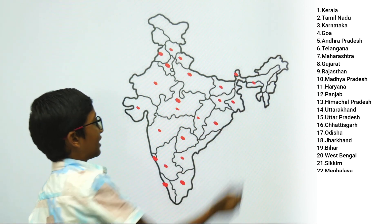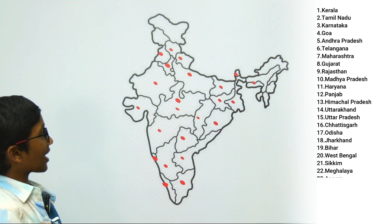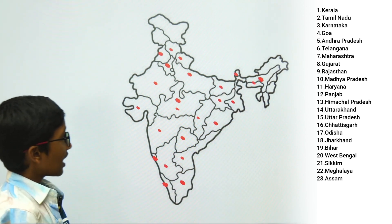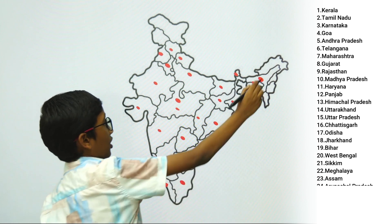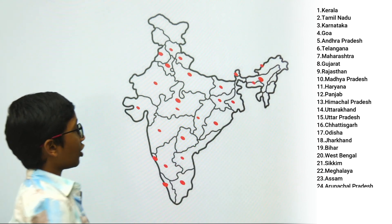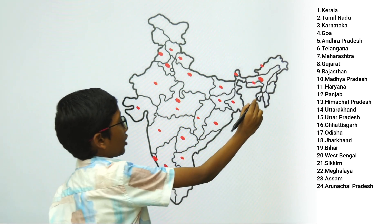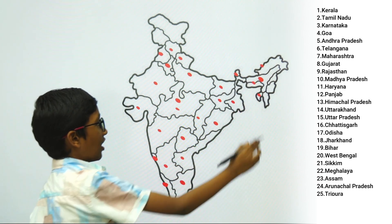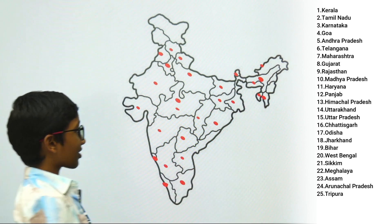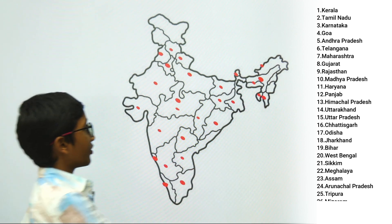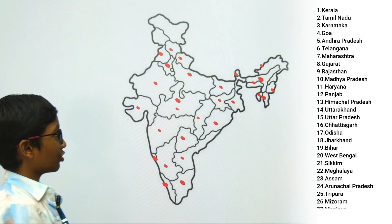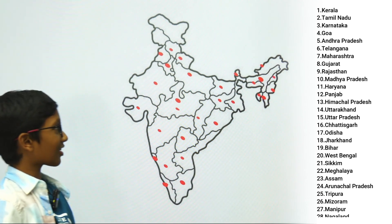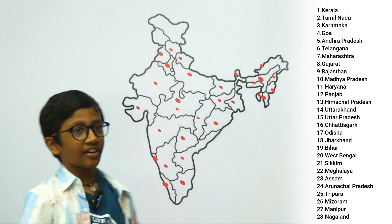22. Meghalaya, 23. Assam, 24. Arunachal Pradesh, 25. Tripura, 26. Mizoram, 27. Manipur, 28. Nagaland.